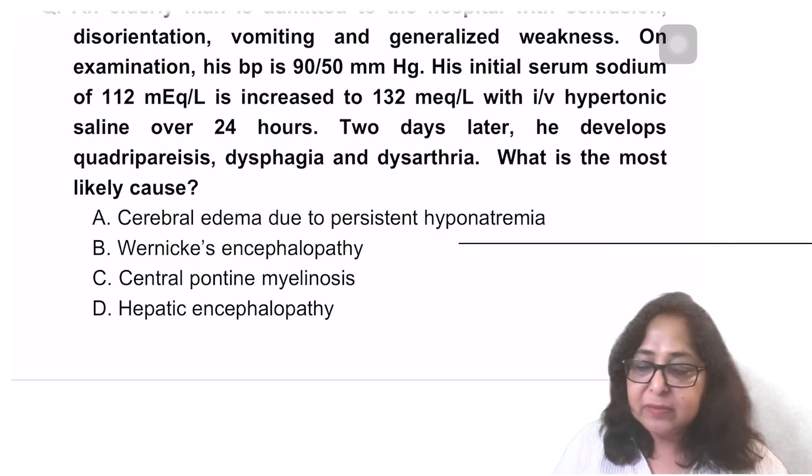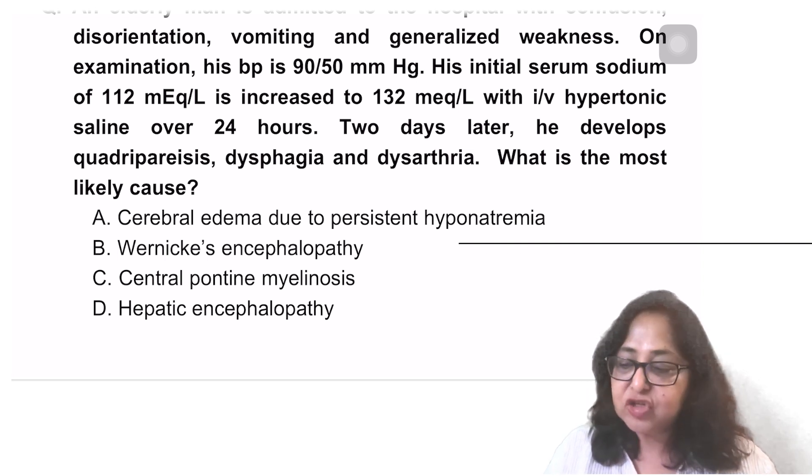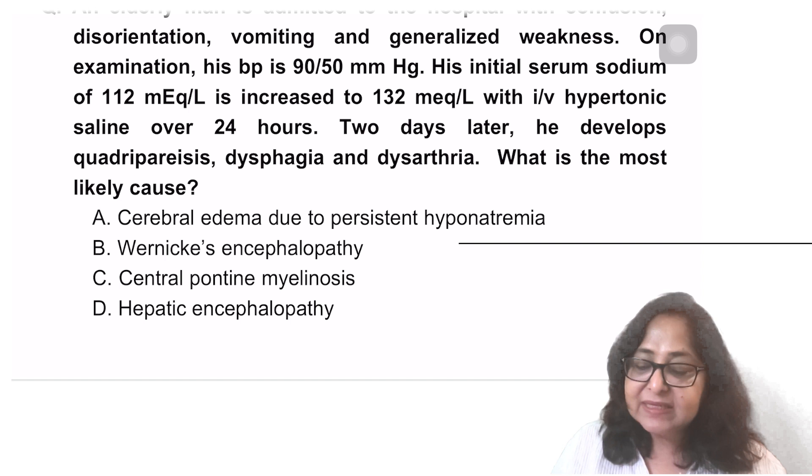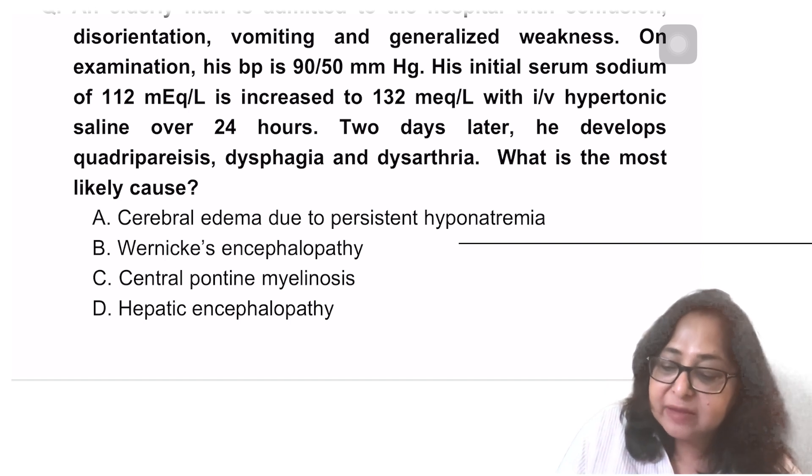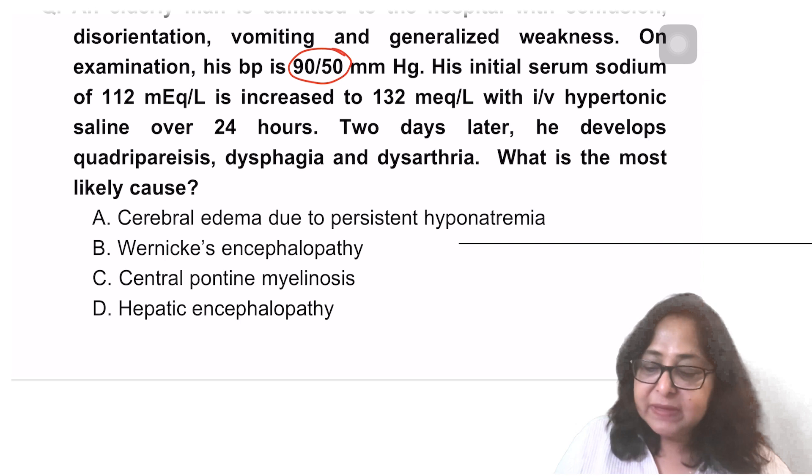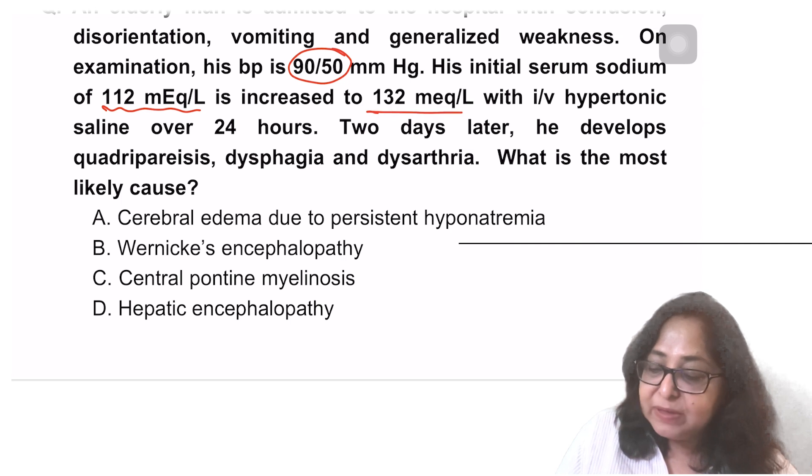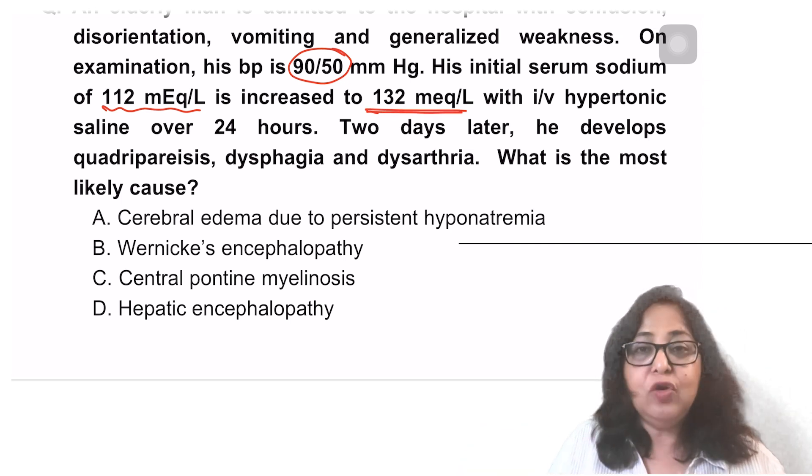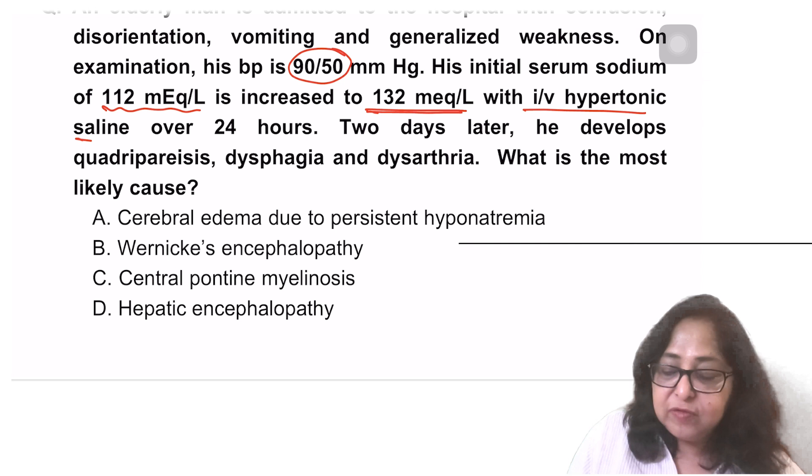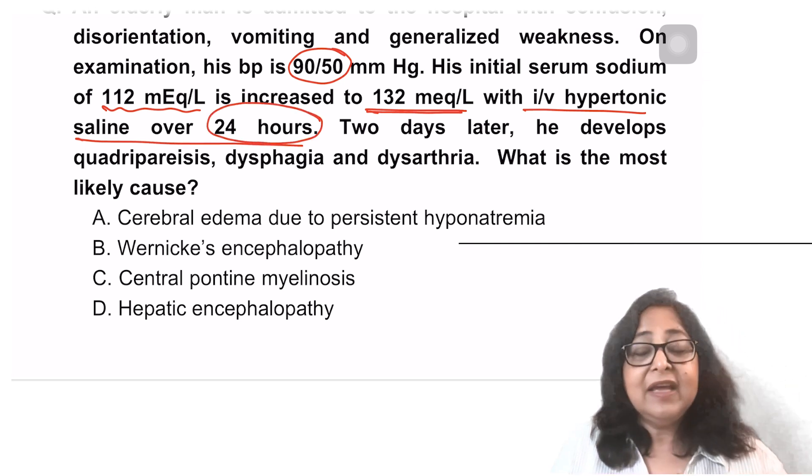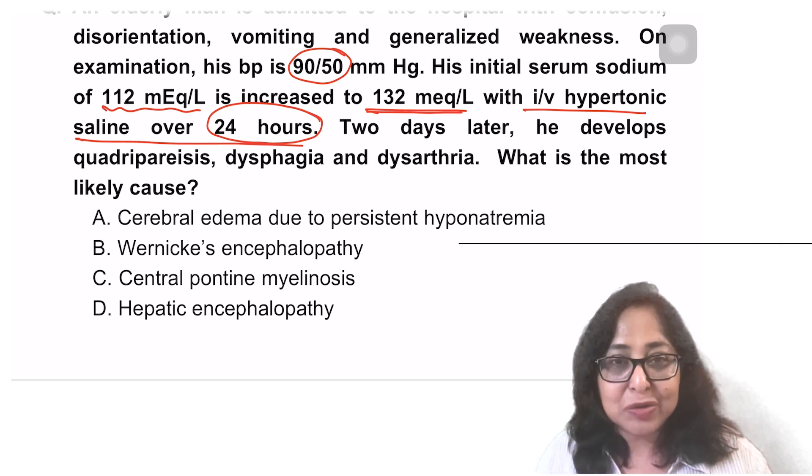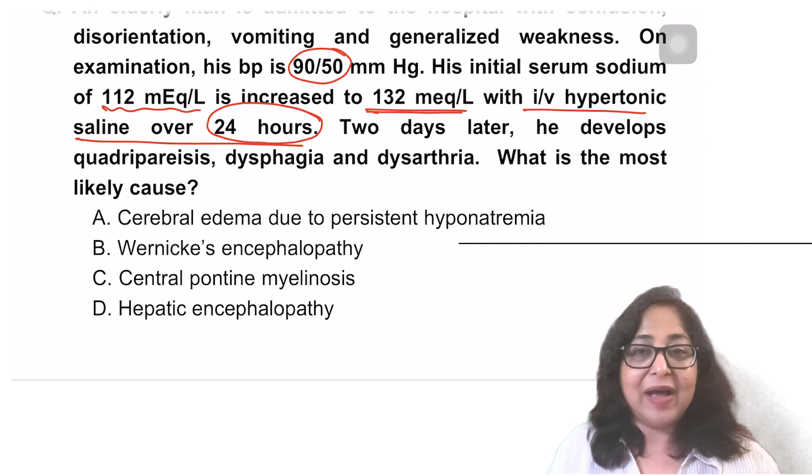Let's have a look at the next question. An elderly man is admitted to the hospital with confusion, disorientation, vomiting, generalized weakness. On examination, his BP is 90 by 50. He is definitely hypotensive. His initial serum sodium is 112, so there is also a hyponatremia. But this is increased to 132 mEq per litre, almost normal. Normal sodium is 135 to 145, with IV hypertonic saline over a period of 24 hours. This should immediately ring a bell. Hyponatremia has to be treated, has to be corrected very gradually. This is a rapid correction of hyponatremia.